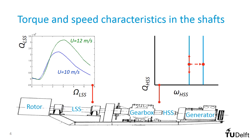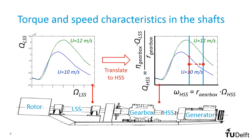Finally, we get to the crucial step. In the high-speed shaft we have looked into the direction of the generator. But what are the torque-speed characteristics if we look from the high-speed shaft into the direction of the rotor? In other words, what if we disconnect the high-speed shaft from the generator and connect it to the testing machine there? We can achieve these characteristics by using the gearbox properties. These tell us what happens to the torque and speed from the low-speed shaft when they are transferred to the high-speed shaft. Using these relations we can translate the torque-speed curve of the low-speed shaft to its equivalent in the high-speed shaft, as shown here.